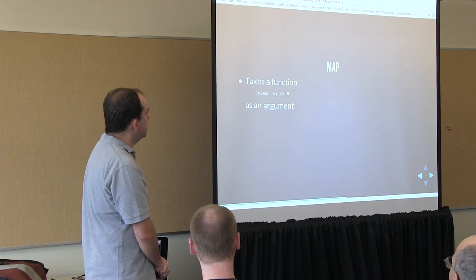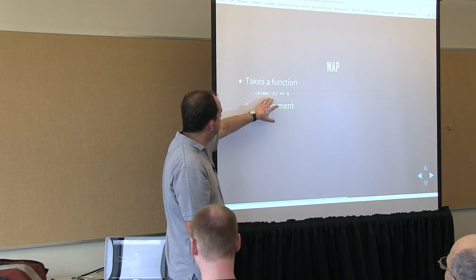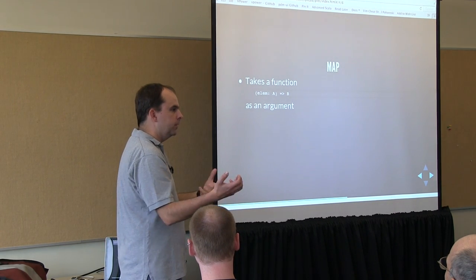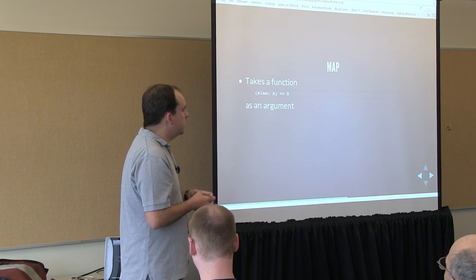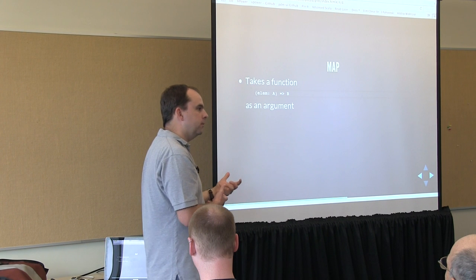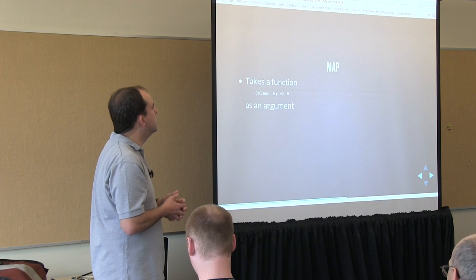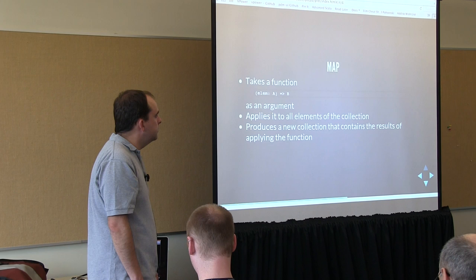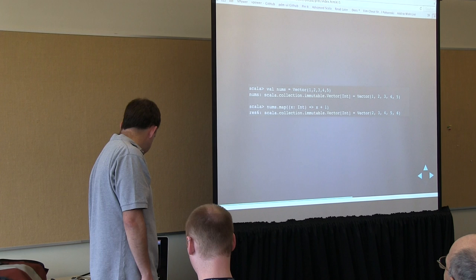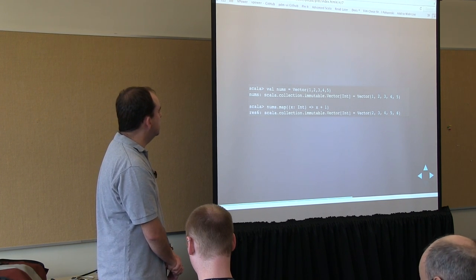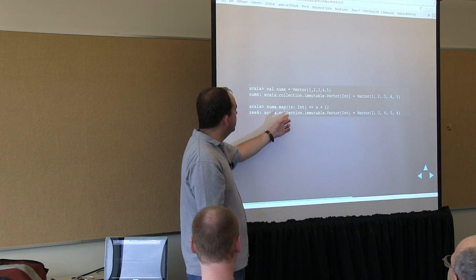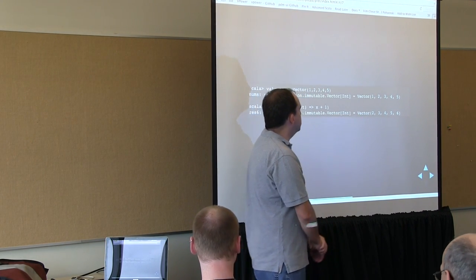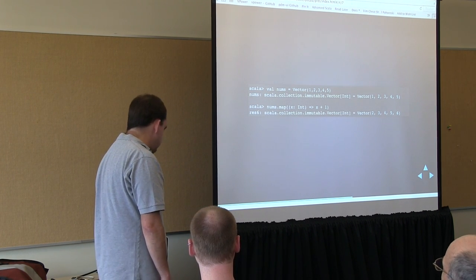The map function takes a function with this signature: some element of type A, and it returns a value of type B. So it can transform a collection from one type to another. The collection will have the same number of elements as the original — unlike filter where you can reduce the number of elements. It applies the function to all elements and produces a new collection. So we take a vector of numbers, define a function that adds 1 to the input value, and get back another vector of ints with one added to each element.